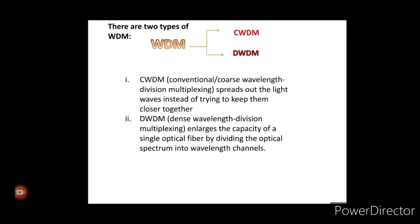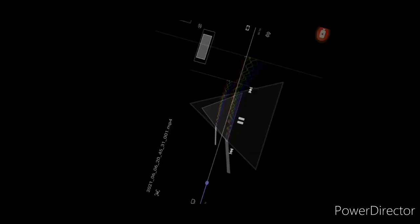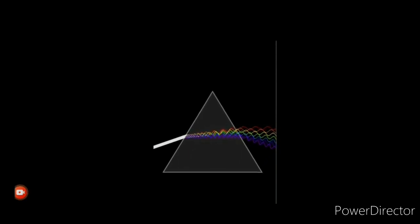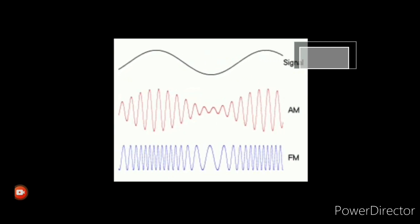There are two types of WDM: Coarse WDM and Dense WDM. Coarse WDM means spreading out the light waves instead of keeping them together. Dense WDM is the technology which enlarges the capacity of a single optical fiber by dividing the spectrum into wavelength channels.